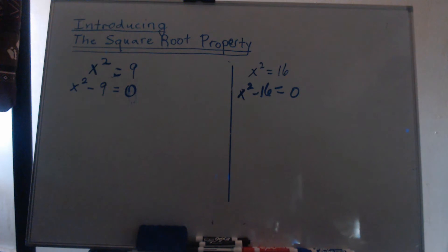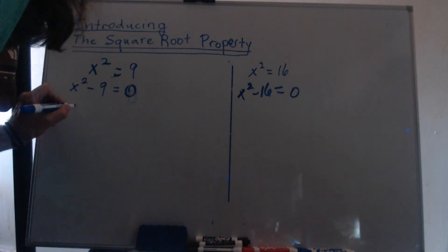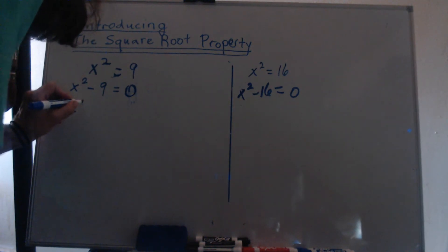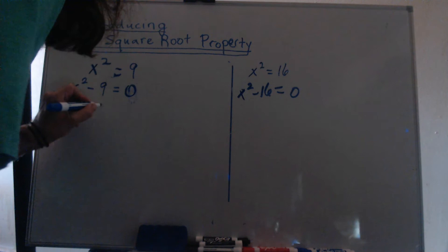Then we would have to factor. Some of you may have learned the AC method and grouping. However, in each case, the 9 and the 16, they're perfect squares, and we can factor using the difference of squares formula.